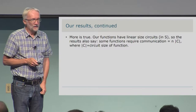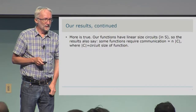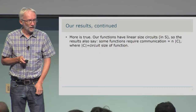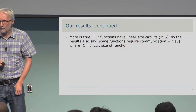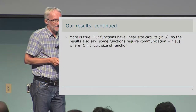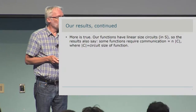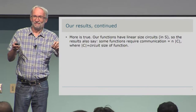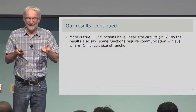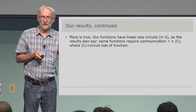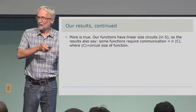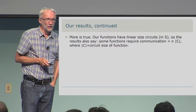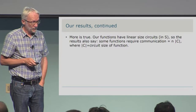More is true: our functions have very small circuits — in fact linear-sized circuits in the input size. So the results also say that some functions require communication n times the circuit size. Intuitively, if you have a general protocol construction that can compute any circuit securely and does the same approach to every circuit, then it must always have that factor-n overhead, because it has to have it for the function we construct. So it seems we're always stuck with this overhead, at least for protocols we know about.